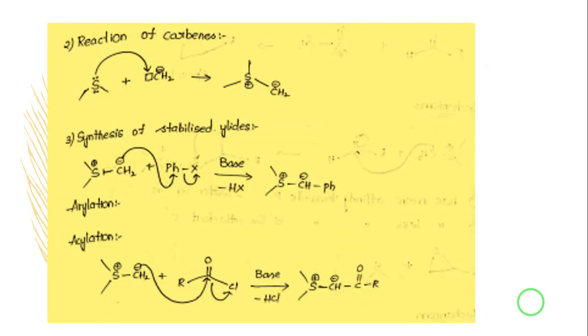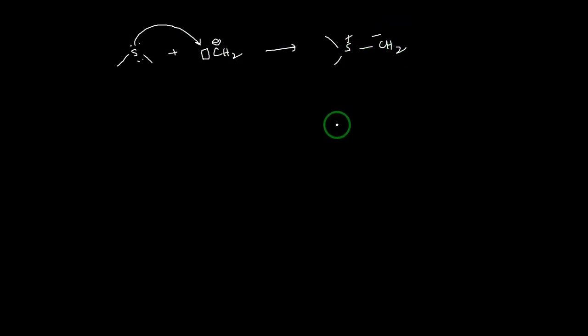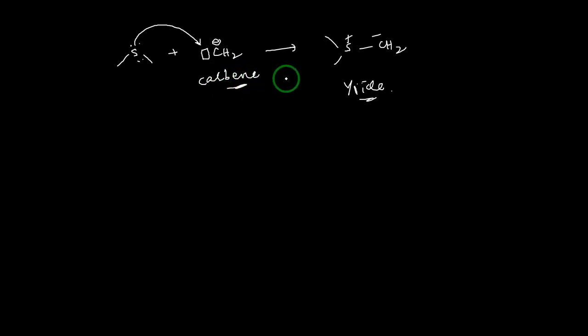Another method is the reaction of dimethyl sulfide with carbene. As you know, carbene is an electrophile — a neutral electrophile with a vacant orbital. Dimethyl sulfide treated with carbene allows carbene to accept electrons from sulfur, directly giving you a ylide. You can prepare sulfur ylides by treating a sulfide with carbene.